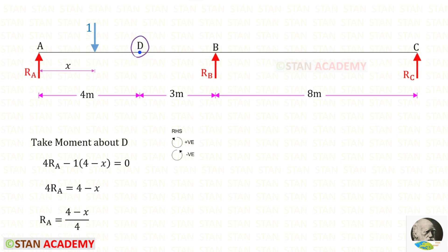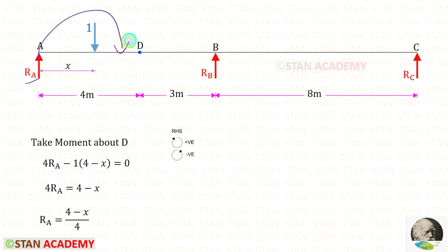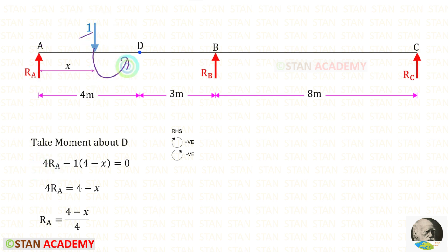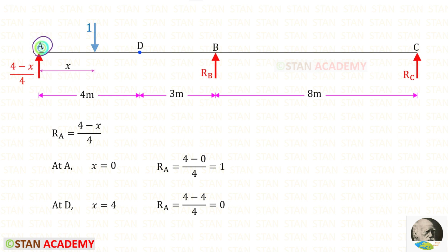So, at point D the moment will be 0. In this case, we can take moment about D and find RA. RA is acting in the clockwise direction, so it will be positive, and the distance is 4. The unit load is acting in the anticlockwise direction, so it will be negative. For the unit load, we have to take the distance 4 minus X. For RA, we will get (4 minus X) upon 4.